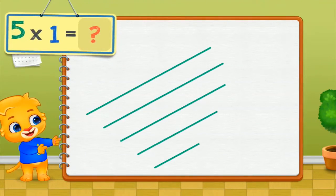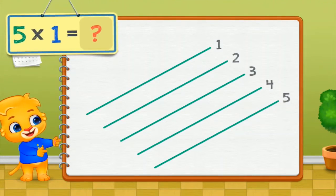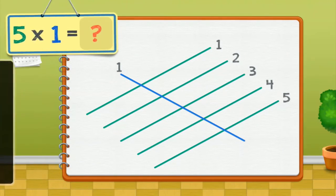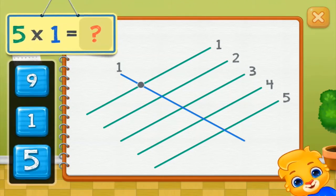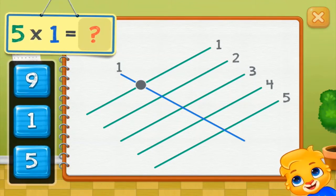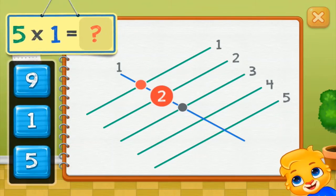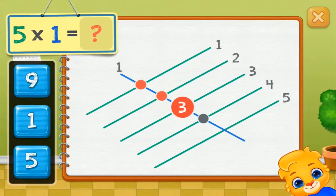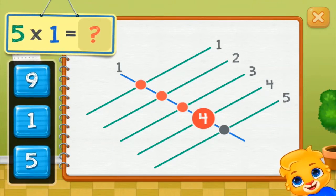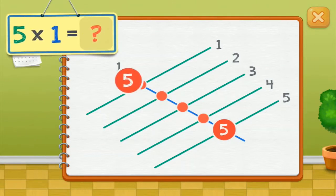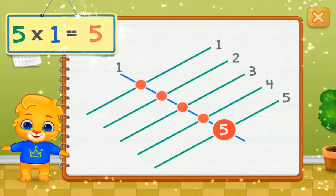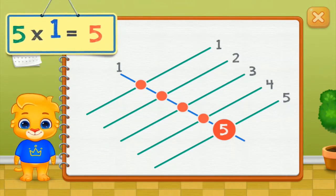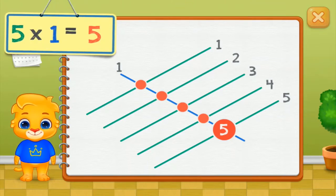Whee! Five times one equals 1, 2, 3, 4, 5. 5 times 1 equals 5.